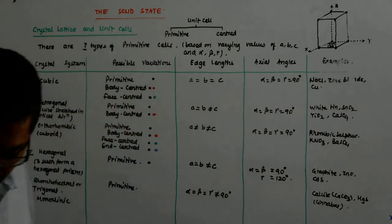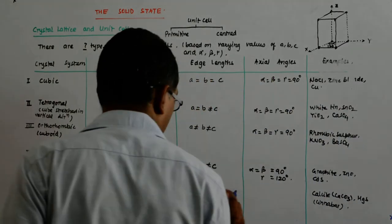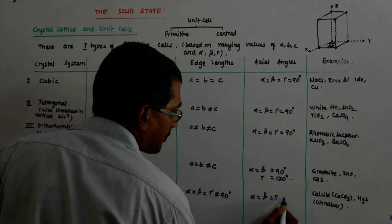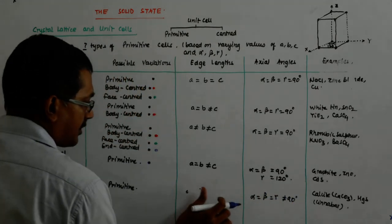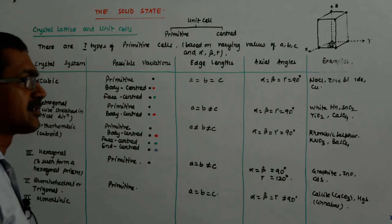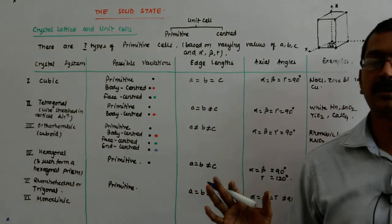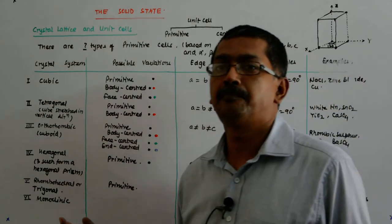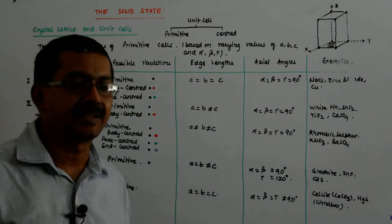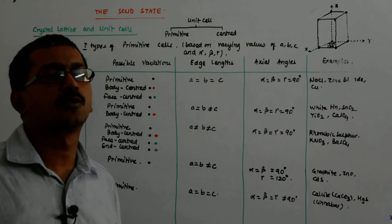So here: a equals b equals c, and alpha equals beta equals gamma, all of them not equal to 90 degrees. That's rhombohedral or trigonal. They call it a rhombohedron because the solid shape it makes is a rhombohedron — which in vectors we call a parallelepiped: a pipe whose cross-section is a parallelogram.